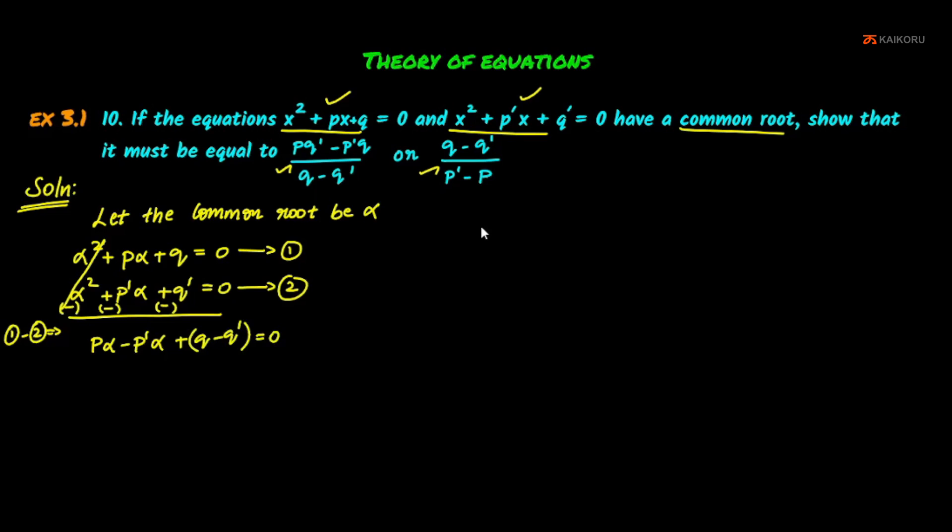Taking α common, we get α(p - p') + (q - q') = 0. Now q - q' is on this side, so if we change the symbol, q' - q is on the other side. Therefore, α = (q' - q)/(p - p').